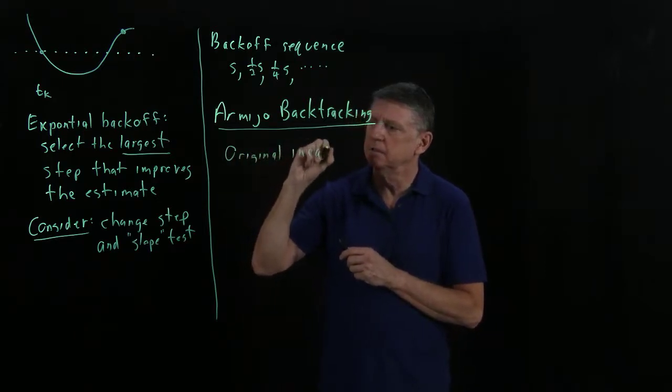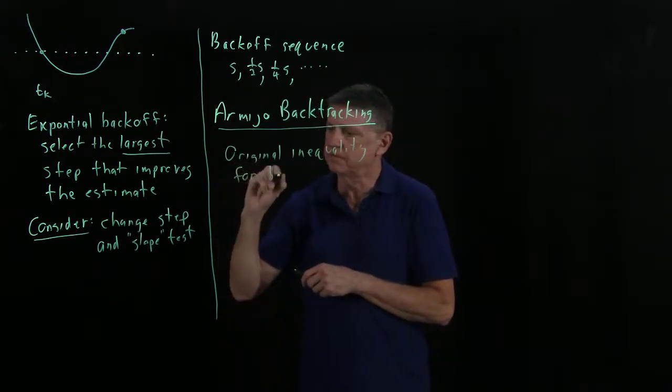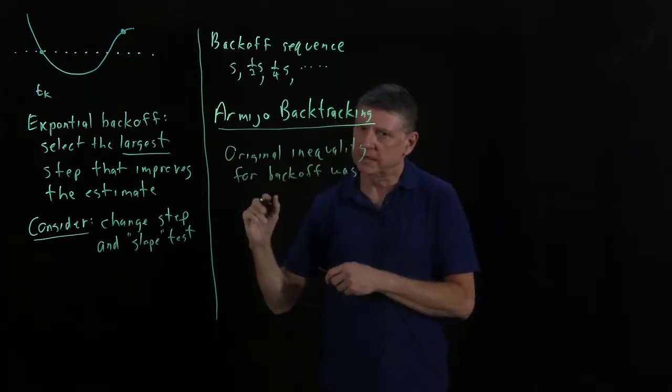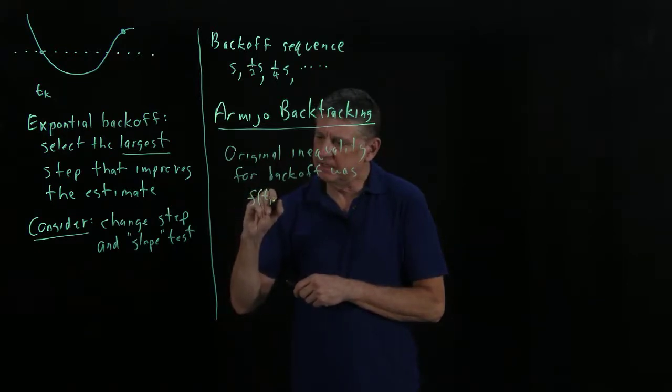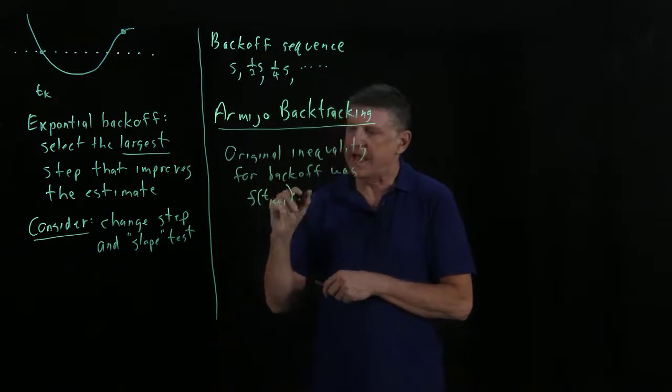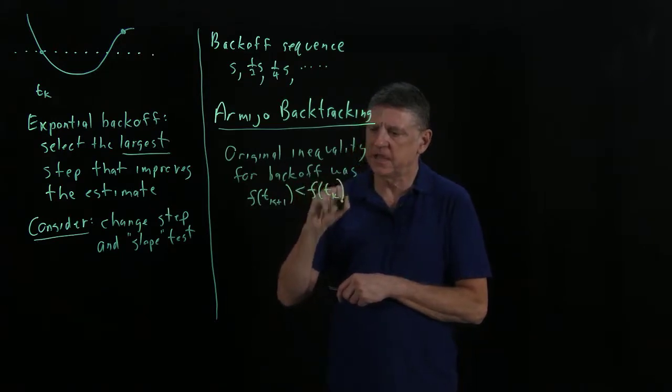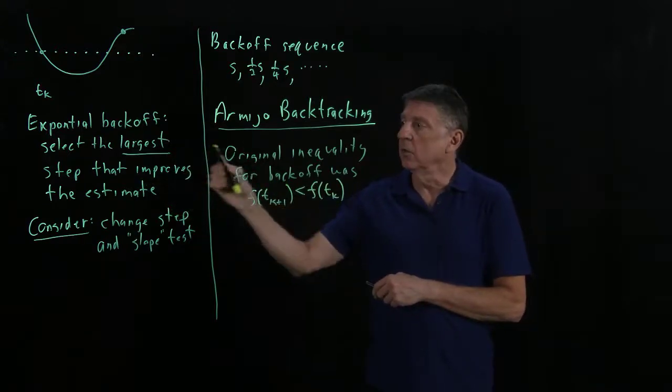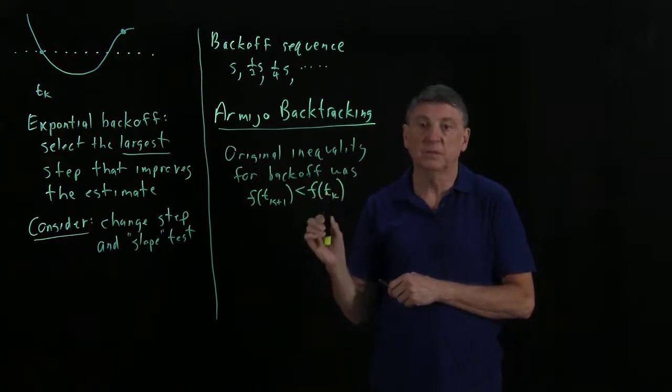So the original inequality test that we had for back-off was we were saying that f at t_k+1 had to be an improvement on the function at t_k. And if we did that, we were in this situation where we were selecting the largest step that was possibly acceptable.